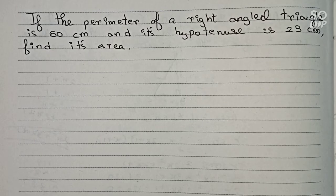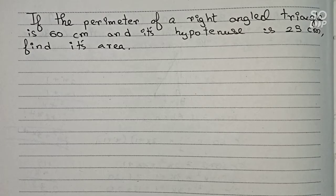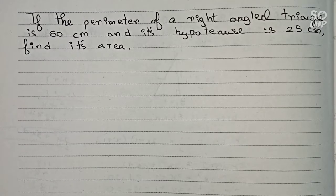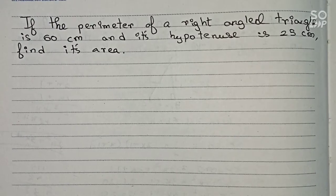Hello guys, welcome to this video. In this video, our question is: if the perimeter of a right angle triangle is 60 centimeters and its hypotenuse is 25 centimeters, find its area. So this is our question and we will solve it.